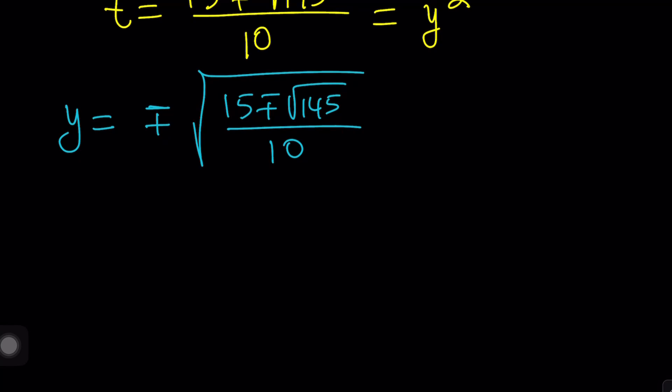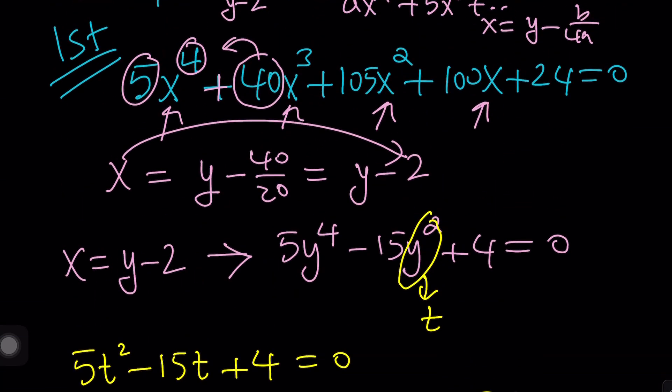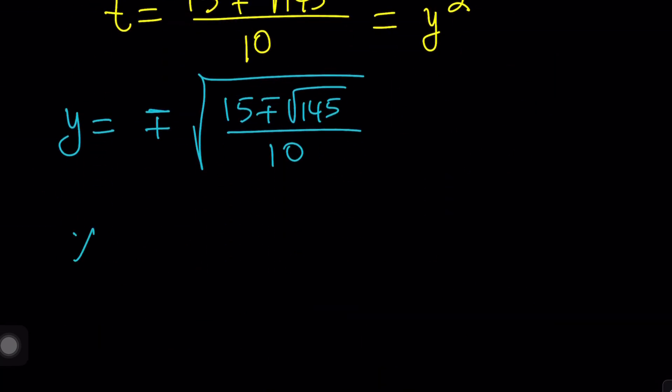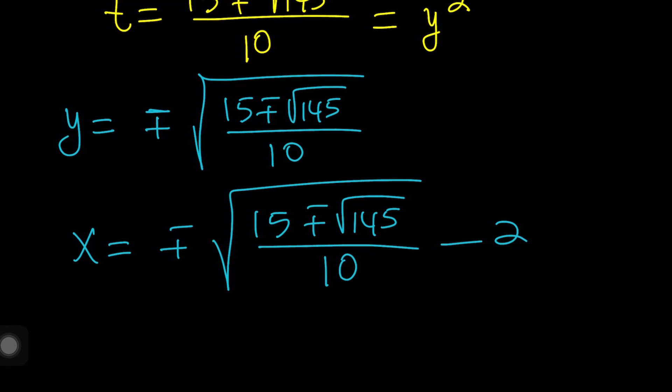But this is just y. So, x equals y minus 2. So, we need to subtract 2 from this to get the x values. And again, I'm going to write in the plus minus form. I mean, you can separate them, but who's going to do it, right? Too much work. We've got to be lazy. So, that is going to be the x values. And there's four of them. Consider all possibilities. Alrighty. So far, so good.